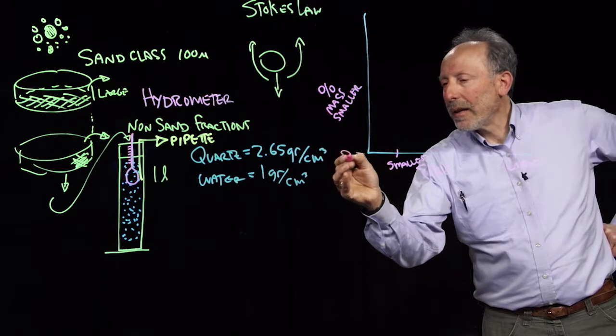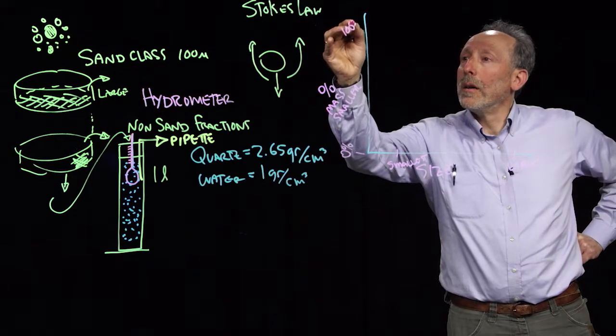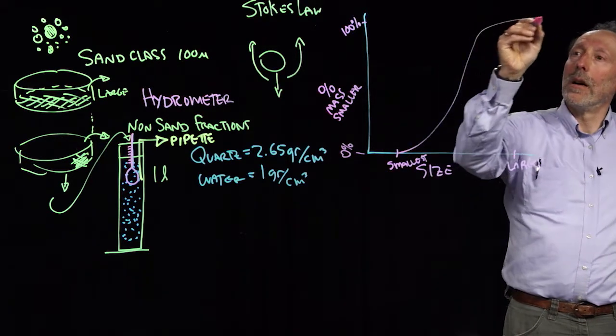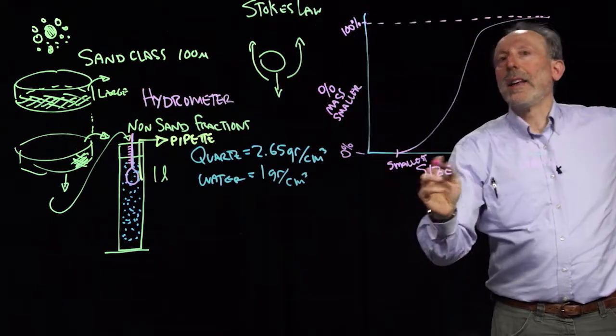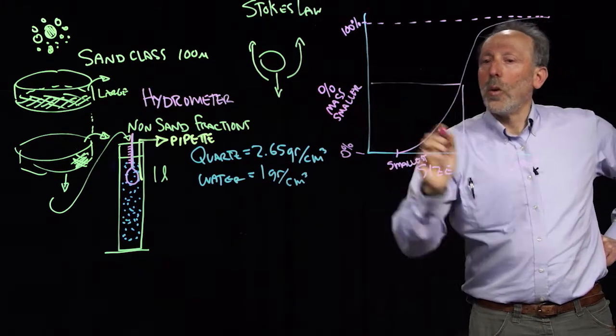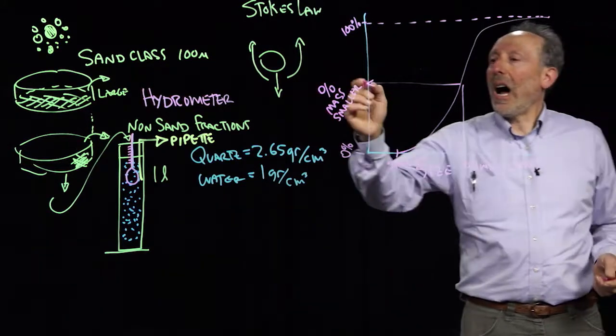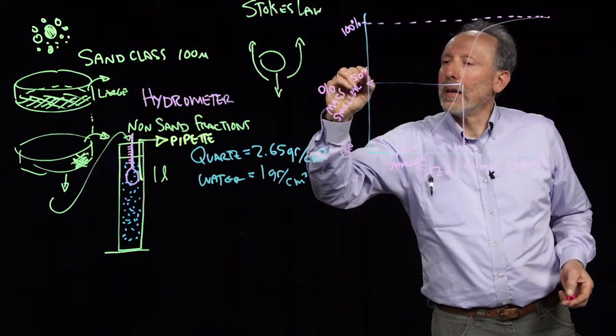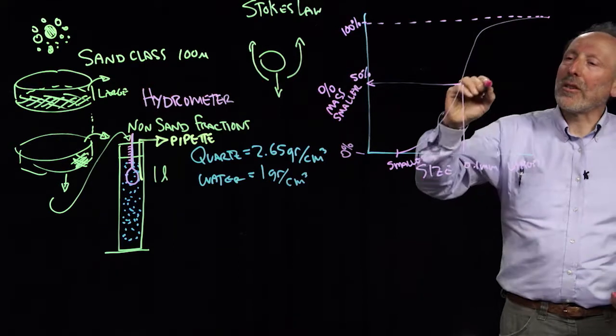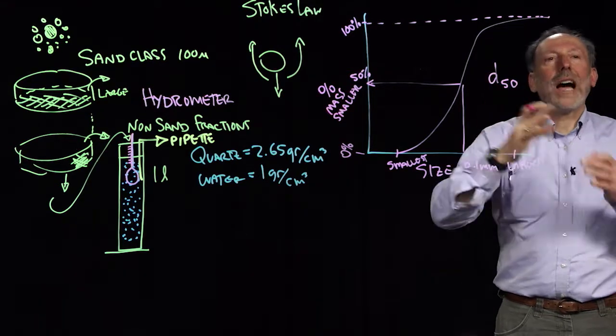So what we know is that 0% of the sample will be smaller than the smallest one and 100% of the sample will be smaller than the largest. So what you'll end up with is a curve that spans the smallest to largest size. And then at any given point, we can identify for this size, which let's say is 0.1 millimeters. That would be a typical size. We can say that 50% of the mass of our sample was made up of particles smaller than that size. And we will then call that the D50. And D50 then says it's the diameter of the particle for which half of the mass is smaller.